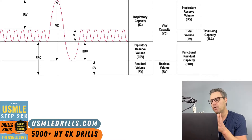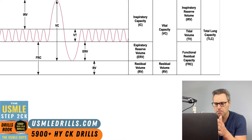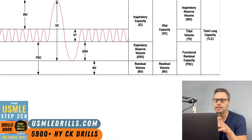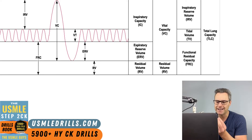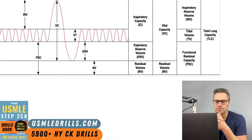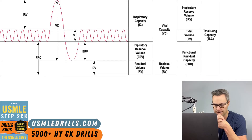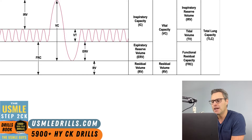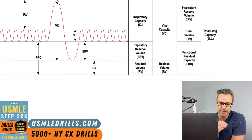Vital capacity is the volume of air breathed out after the patient takes their deepest inhalation and maximum exhalation possible. Residual volume is the volume of air remaining in the lungs after a maximum exhalation. The inspiratory reserve volume is the amount of air inhaled from peak normal inspiratory volume to total lung capacity. Tidal volume is the amount of air that moves in and out of the lungs with each normal respiratory cycle. Functional residual capacity is the volume in the lungs at the end of a normal exhalation.